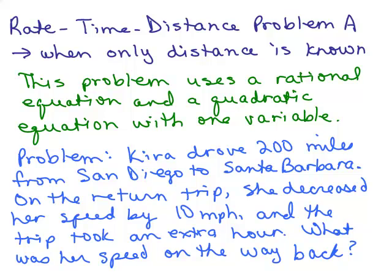This is a rate-time-distance problem, but it's a problem when only the distance is actually known. In other words, we don't know exactly what the rate or the time is. So this problem can be done with two variables, but I'm going to do it using one variable and we'll be working with a rational equation and a quadratic equation. So you will have already needed to know how to solve those kinds of equations.